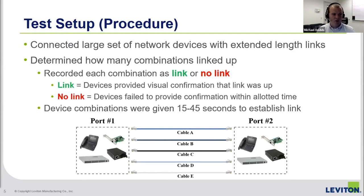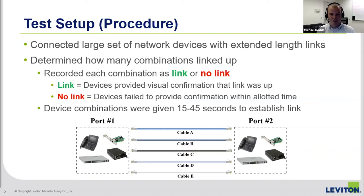In order to answer these questions, we compiled a large set of network devices and connected them with extended length segments, then determined how many of those combinations could actually link up. Each combination was recorded as either a link or no link. A link was defined as the devices providing some visual confirmation that link had been established — via LEDs on the switch, output from a command line interface, or a status reported by a visual GUI. No link was defined as the devices failing to provide that visual cue within the allotted time, generally 15 to 45 seconds.